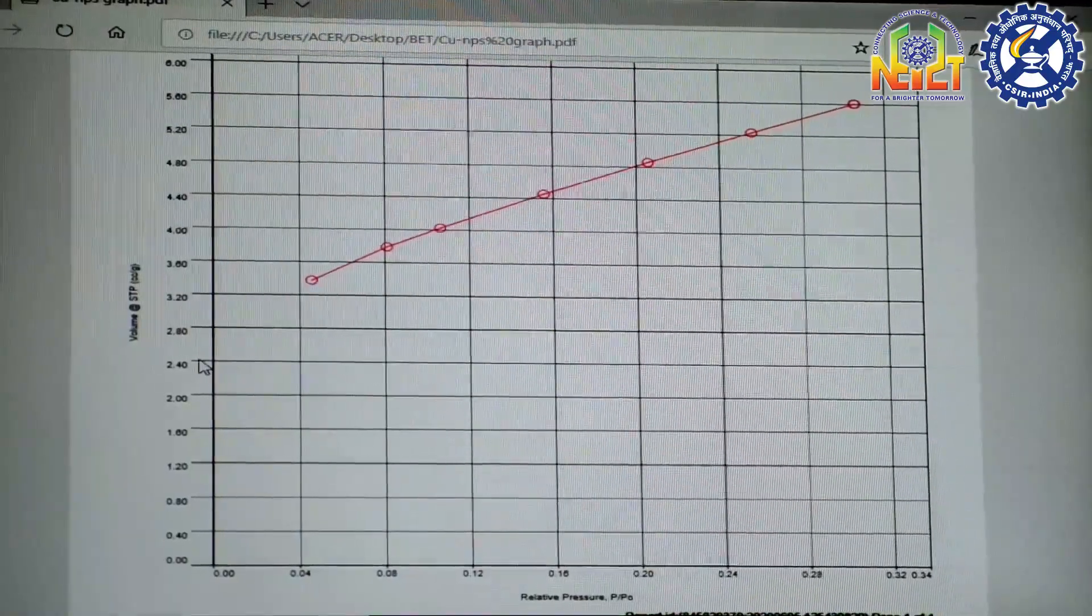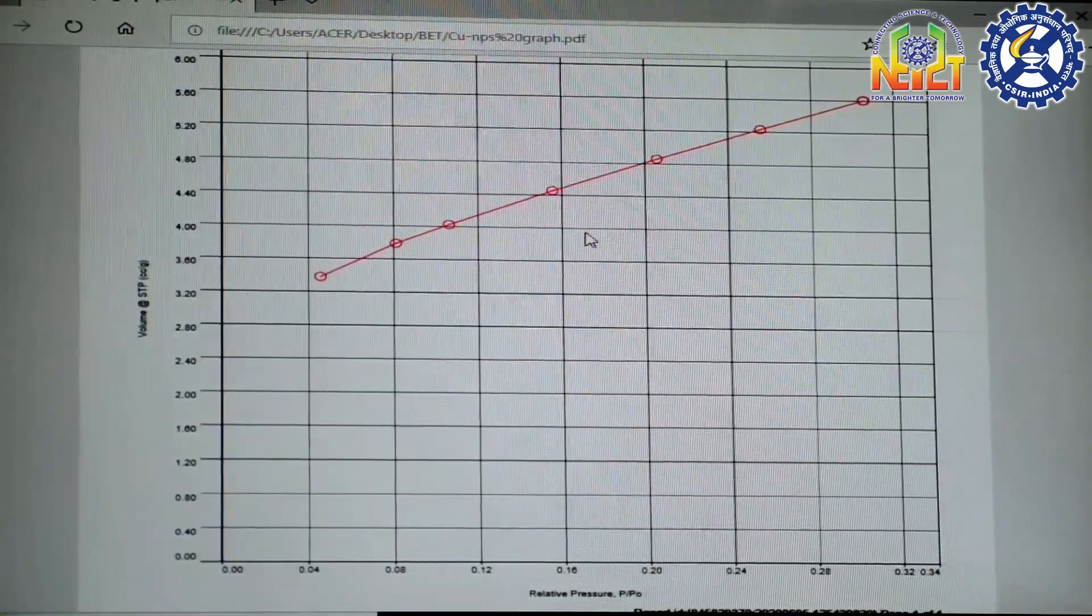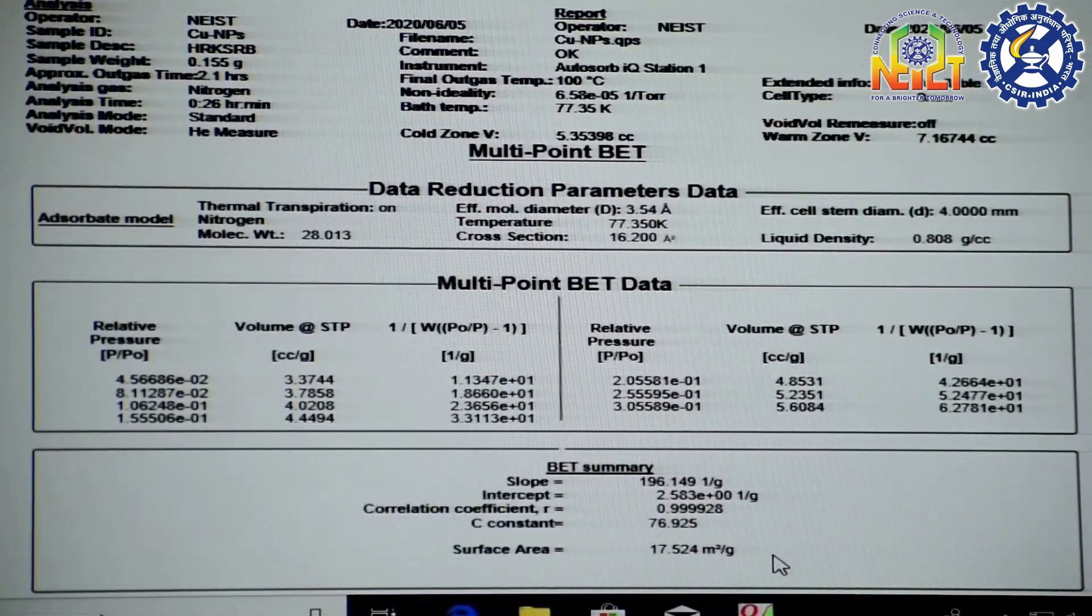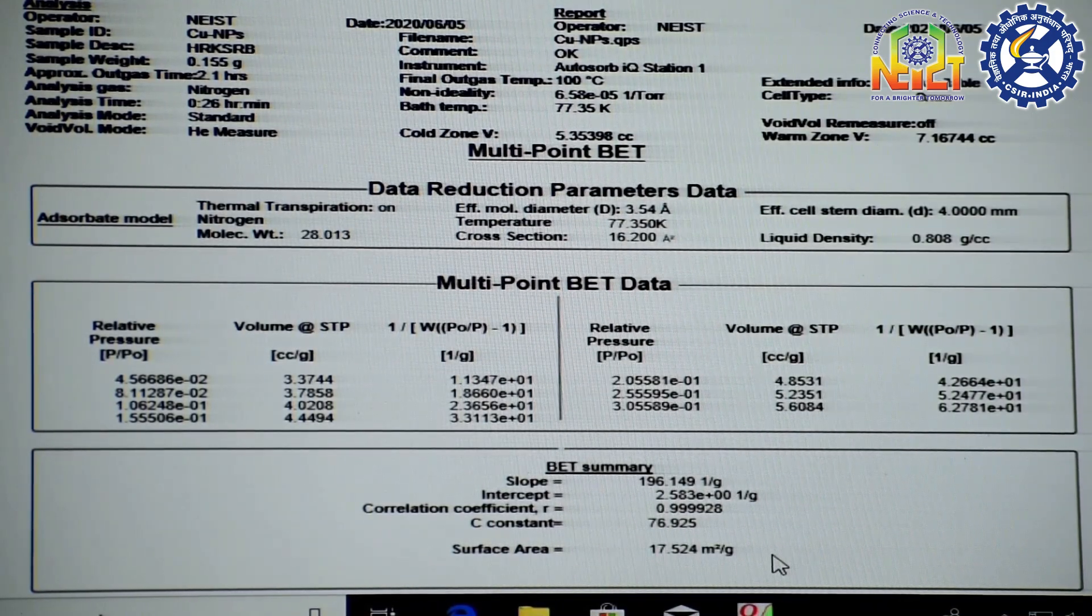And it is the volume versus relative pressure graph. We have taken 7 point BET for measuring surface area. And these are the multi point BET results. We have to find the slope and intercept from the graph to measure the surface area.